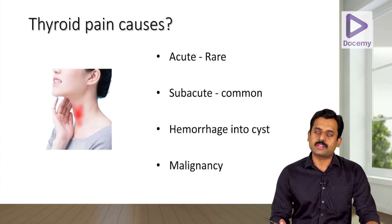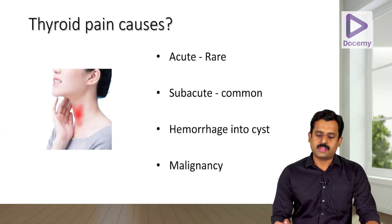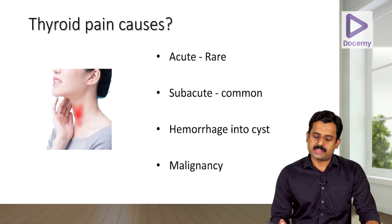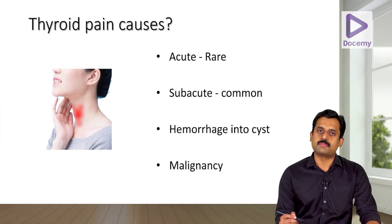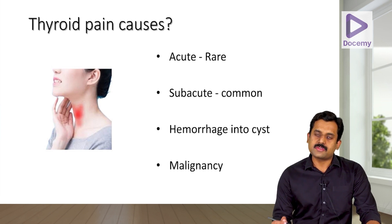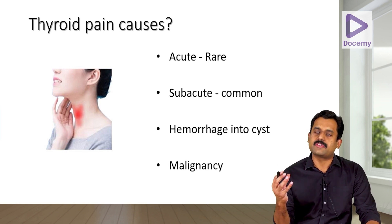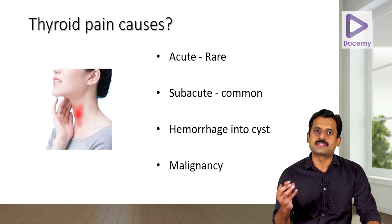What are the common causes of thyroid pain? The terms acute and subacute denote thyroiditis — either acute thyroiditis or subacute thyroiditis, of which subacute thyroiditis is more common. Another cause is a hemorrhagic cyst: hemorrhage into the cyst can produce thyroid pain.